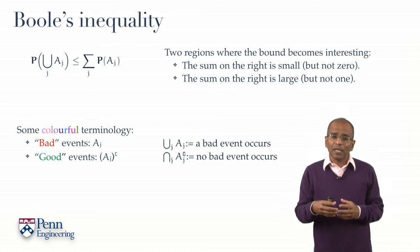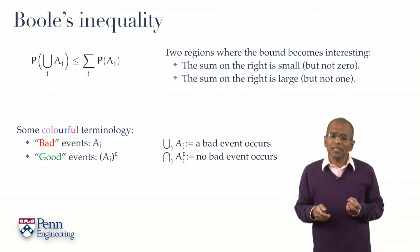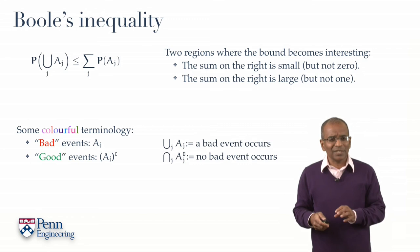Conversely, if the complement of the union, in other words the intersection of the complements of the Ajs occur, then no bad events occur. That's an interesting thing to look at. So with this metaphorical view of these events, let's turn to the two regions where Boole's inequality might perhaps be useful.